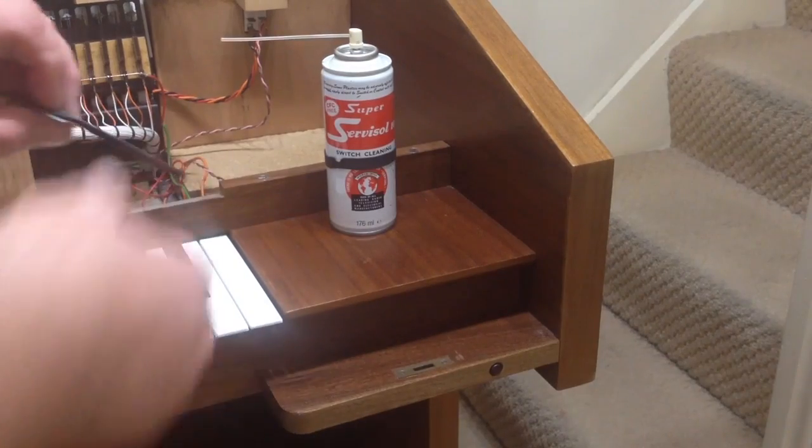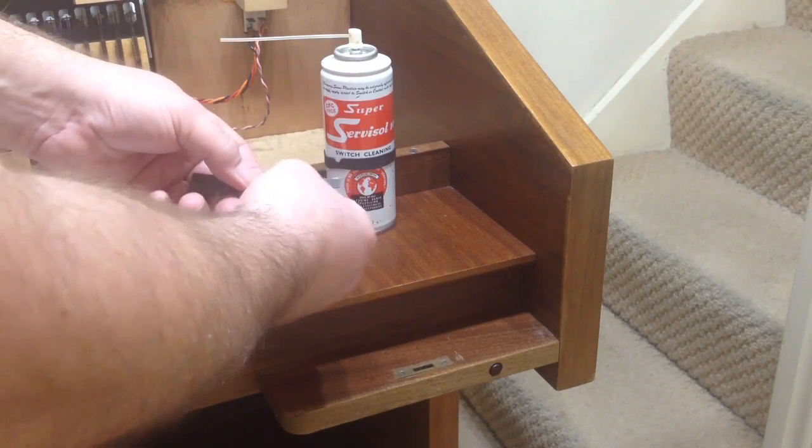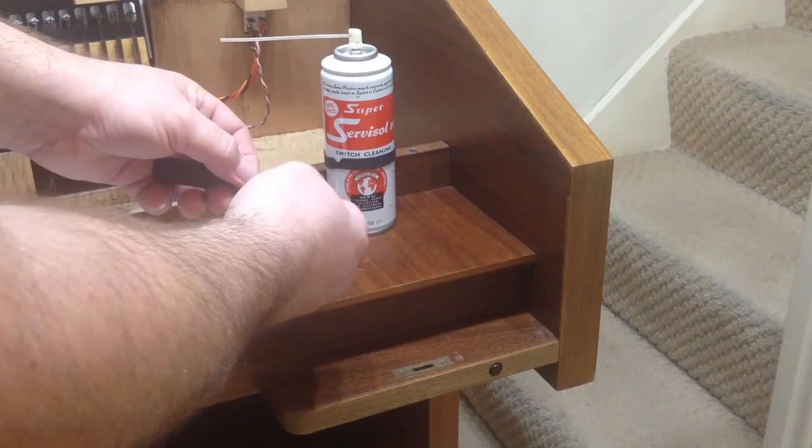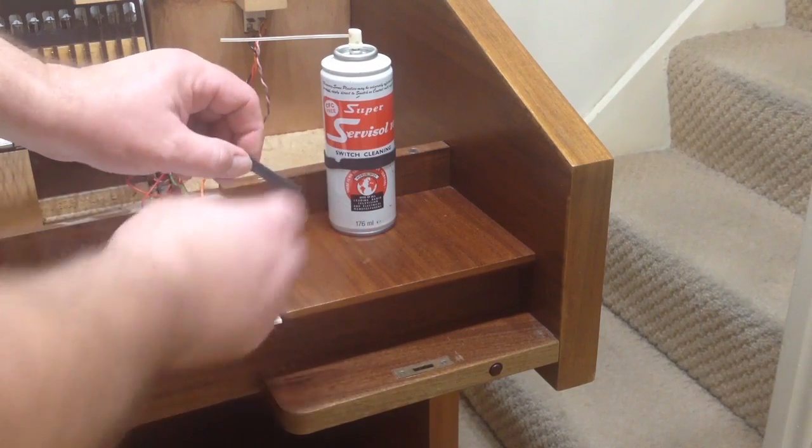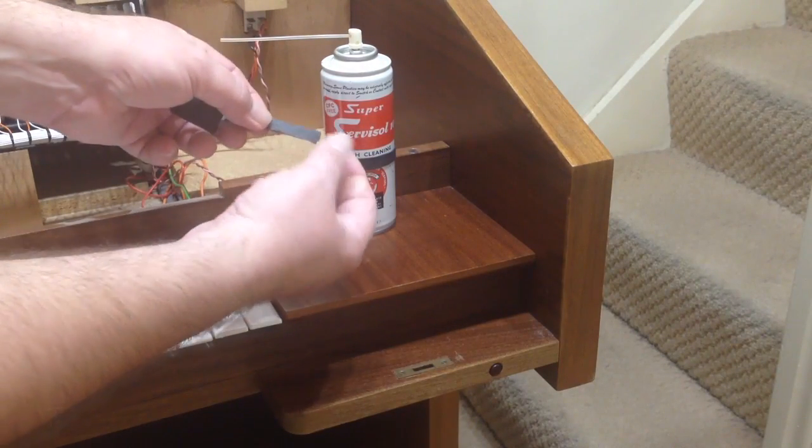Okay, so here's our emery paper, or wet and dry. It's just folded up so that its outer edge is on both sides, with the abrasive on both sides, so that we can put that in between the two pieces of metal and just pull it through.